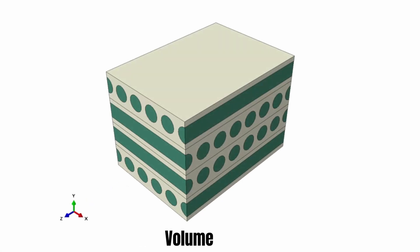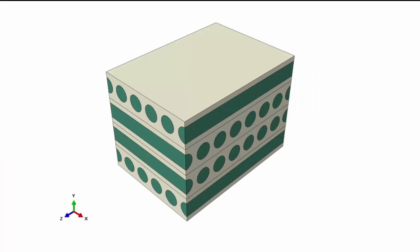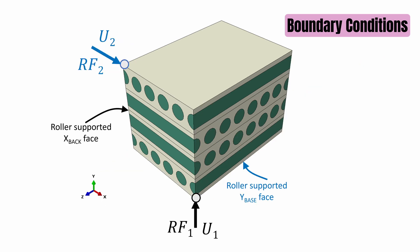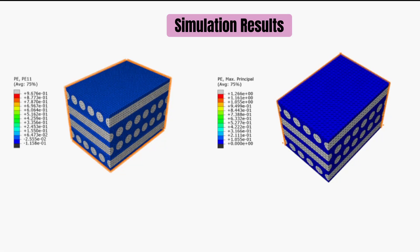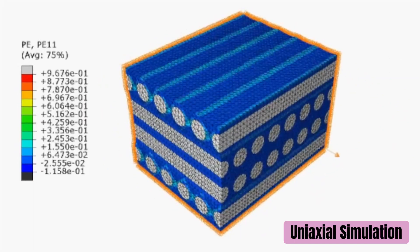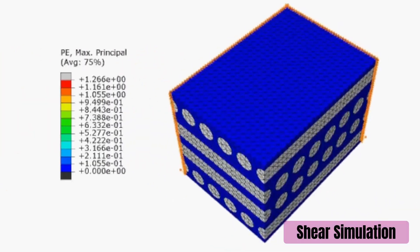This is a representative volume element of a bi-directional composite. To model this kind of composite, you first create the virtual domain, apply the boundary conditions necessary to impose all stress deformation in x, y, and z, as well as in-plane shear directions, and finally post-process the result. The simulations you get show uniaxial extensional deformation and in-plane shear deformation as examples.